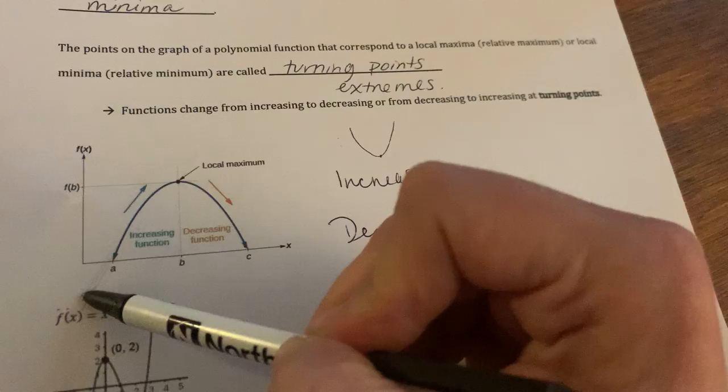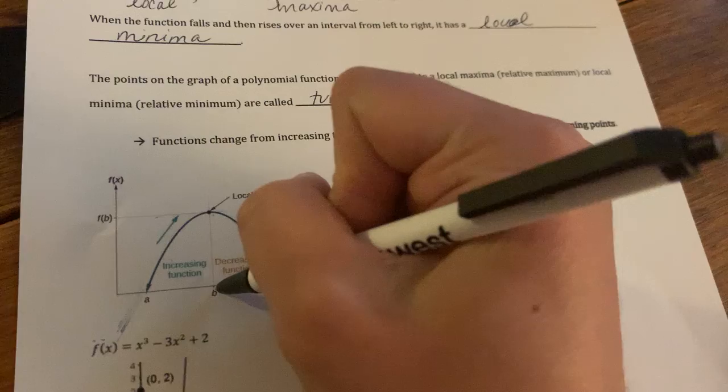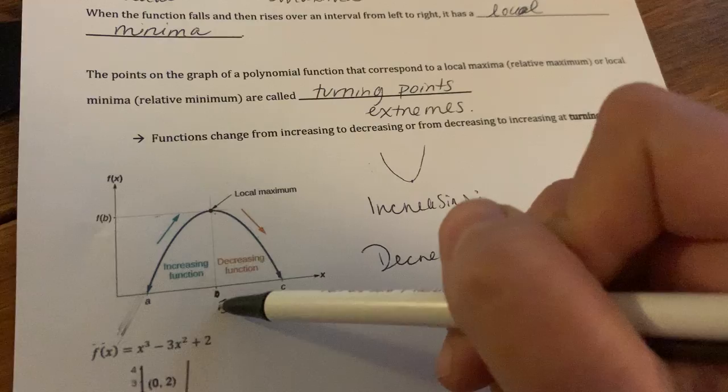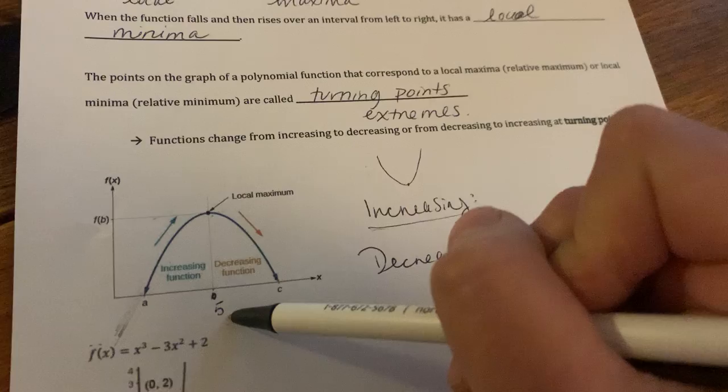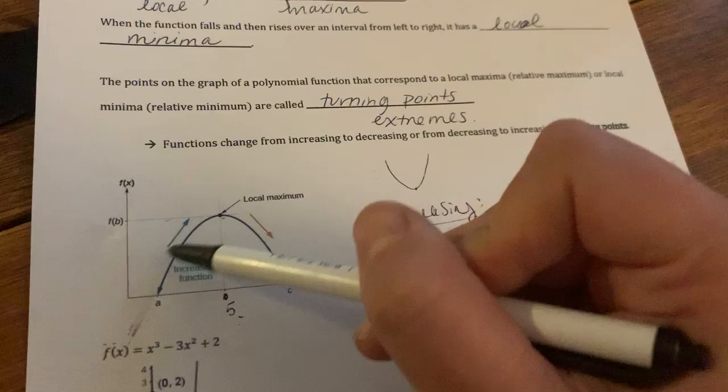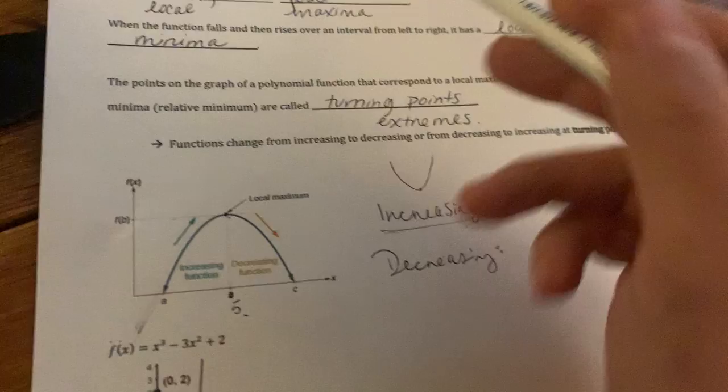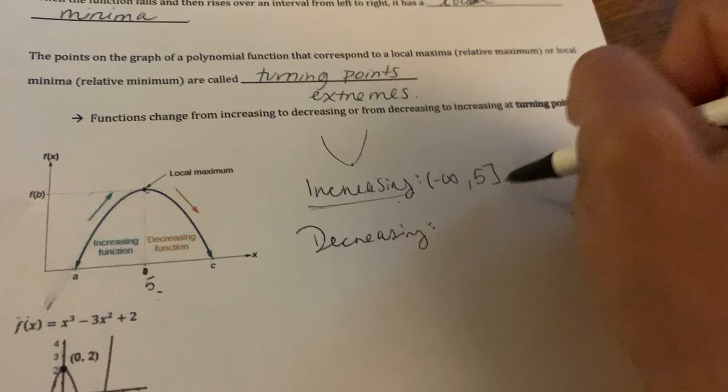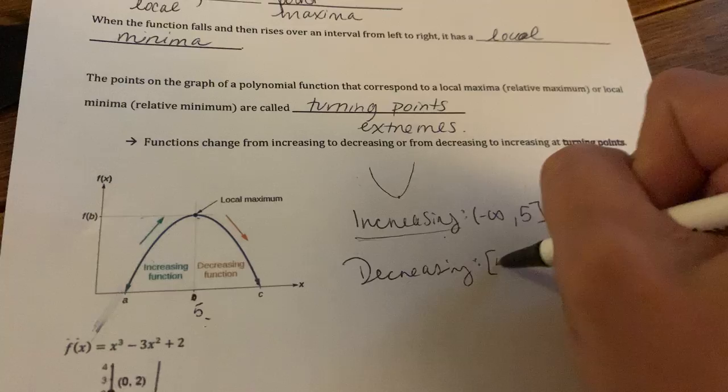But from where? So if you look at the x values, let's just call this five, to give you a better frame of reference. They want to know, increasing is the output, increasing is the y. They want to know the x values when you're increasing. So you increased all the way up to five. Four you were increasing, at three you were increasing, at two, at one, all the way down. So from negative infinity, up until the number five, you were increasing.